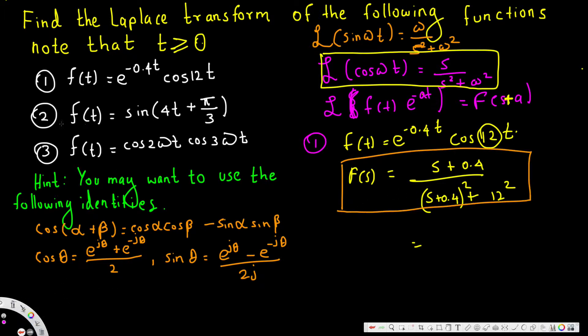Now let's look at the second one: f(t) = sin(4t + 5/3). If we had sin(4t) alone it would be easy, but since we have sin(4t + another term), we have to expand this using the sine addition formula — that's a basic thing you have to know.